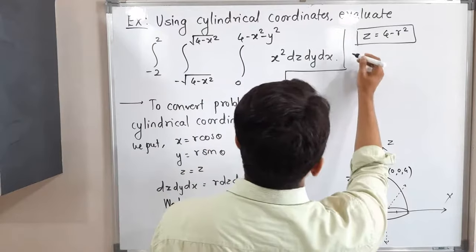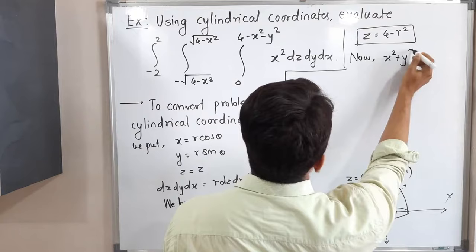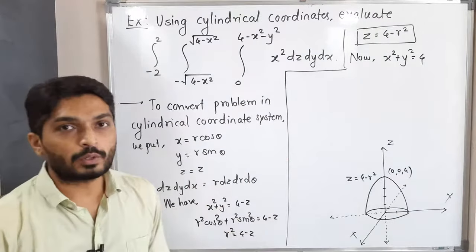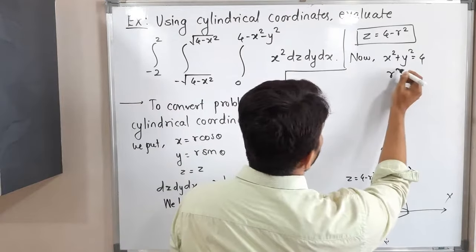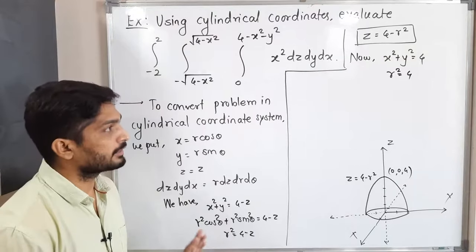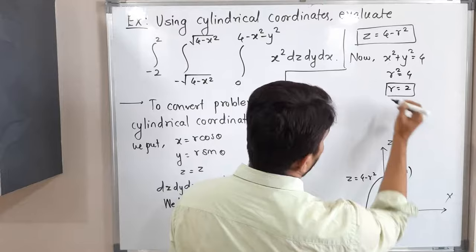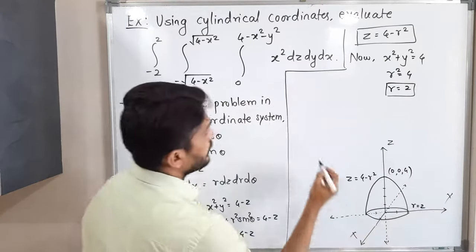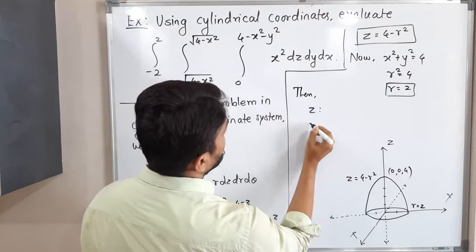For the equation of the circle x² + y² = 4, substituting gives r² = 4, so r = 2. This is the equation of the circle at the bottom of the region in cylindrical coordinates.